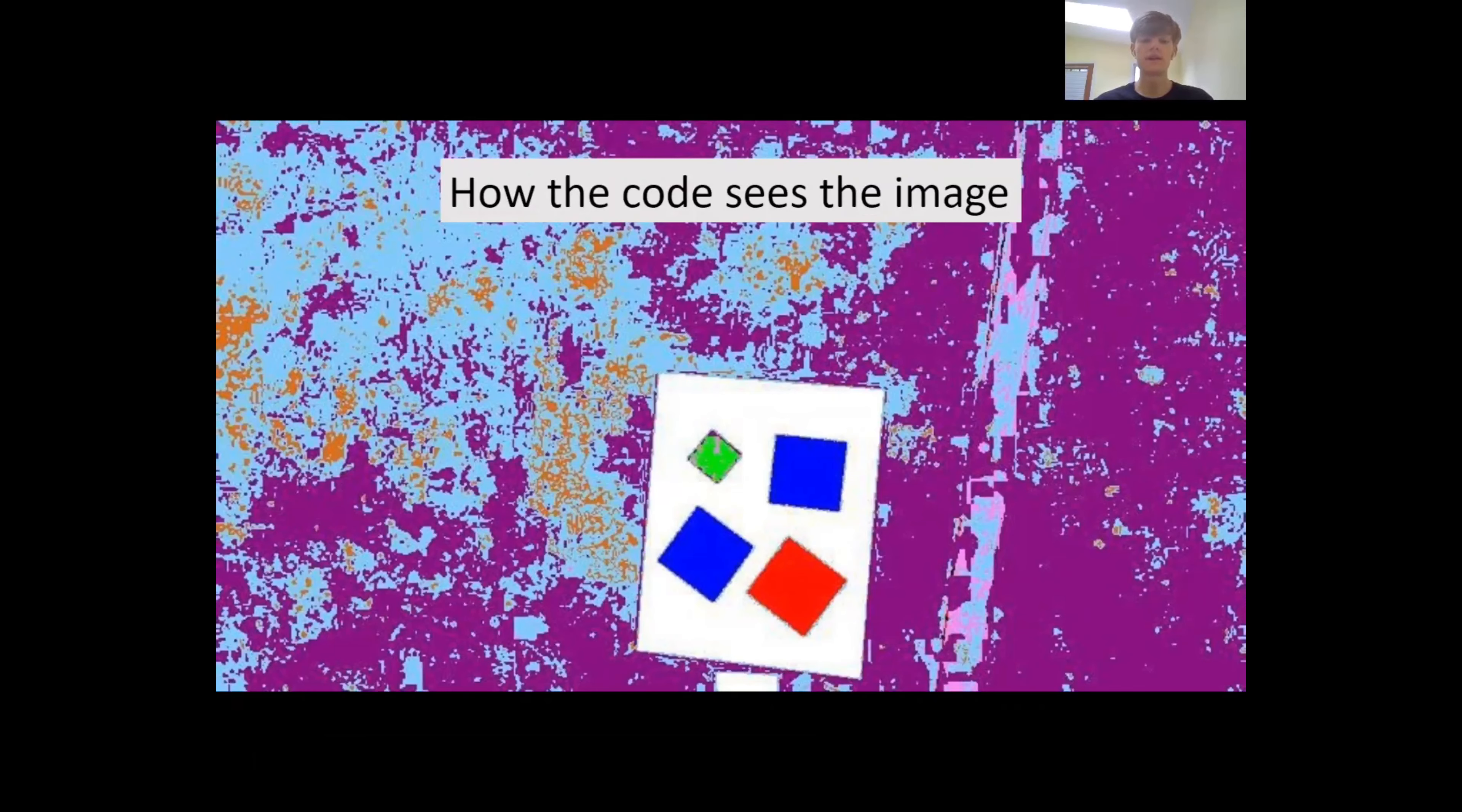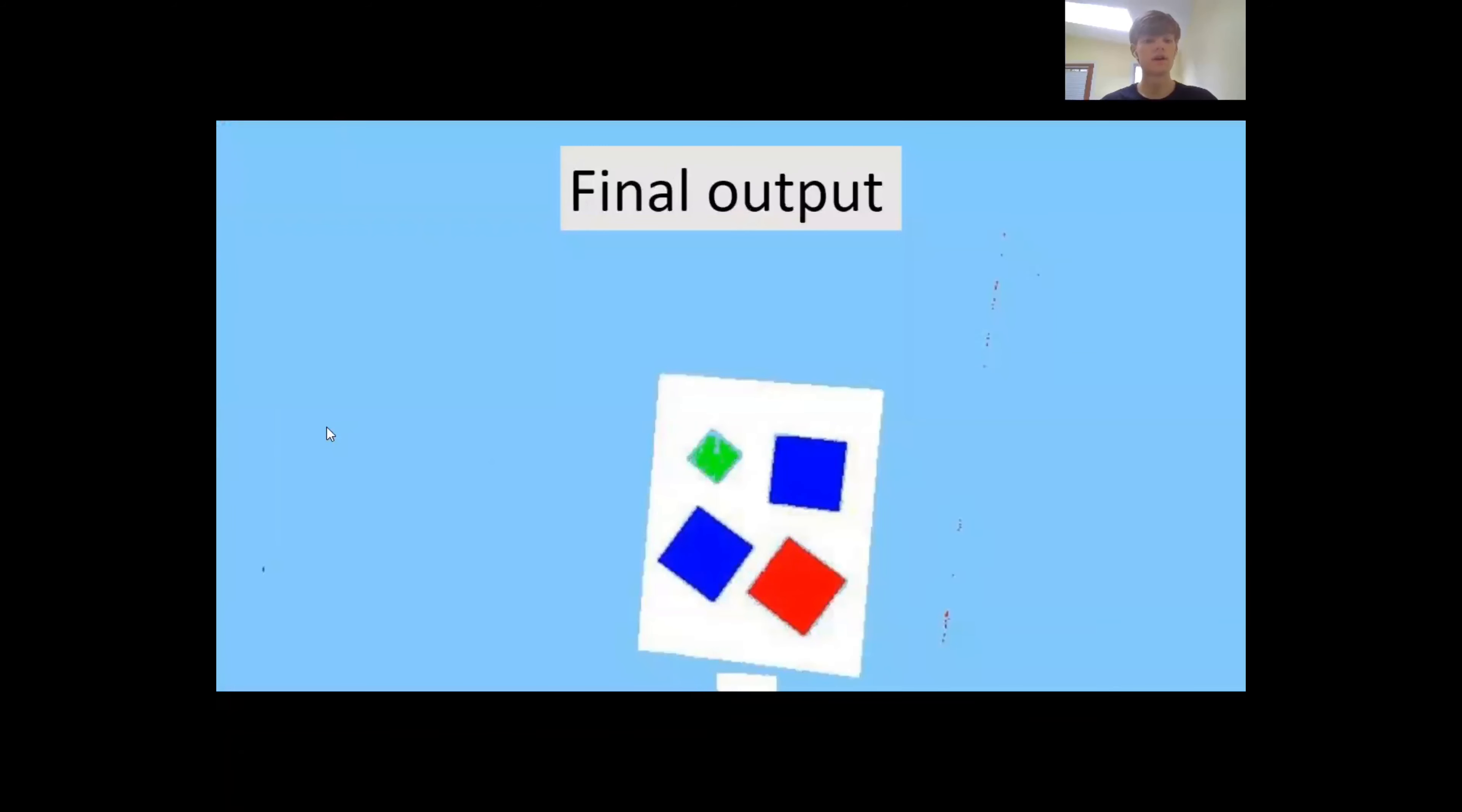The code creates a final image like this one, which would allow ground researchers to identify the plastics much more efficiently. During our flight test, the image processing software performed very well, as visible in this post-processing image. The little error present was due to shadows along the edge of the concrete cracks and along the edges of the plastics themselves.